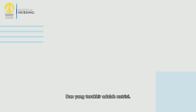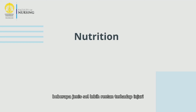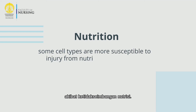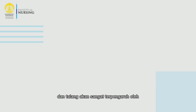Last but not least is nutrition. In addition to mutations, some cell types are more susceptible to injury from nutritional imbalances. For example, red blood cells will be severely affected by iron deficiency, and bones will be severely affected by vitamin D deficiency.